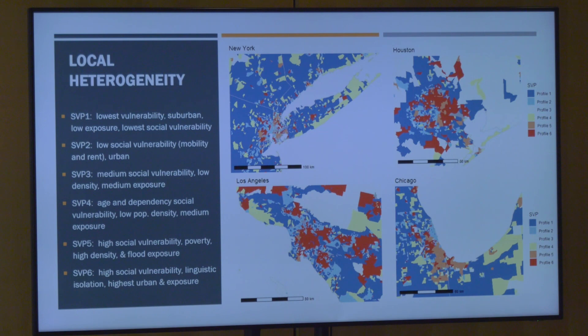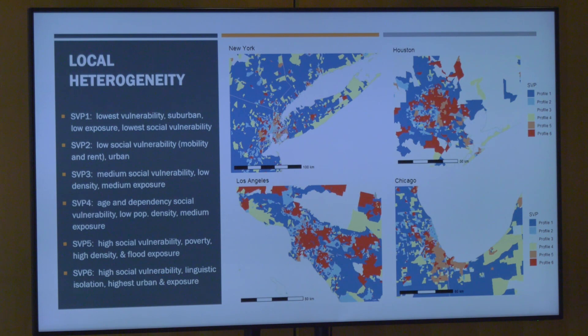At the national level this somewhat obfuscates what's happening locally, but these profiles exist at local scales too. Profiles three and four, which are predominantly rural and dominate the national map, don't show up as much at the metropolitan scale. Looking at selected metro areas — New York, Houston, LA, and Chicago — profiles three and four, which are very spatially contiguous at the national level, become very dispersed at the metropolitan scale. You can start to see the dominance of profiles two, five, and six, which are more urban.